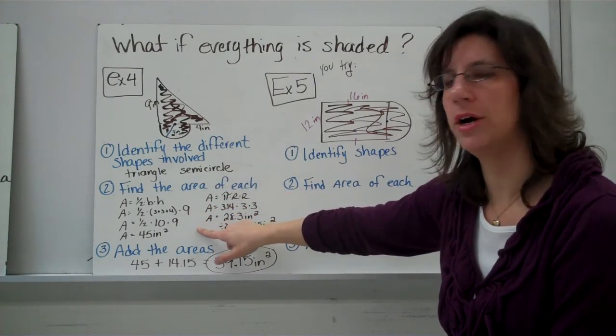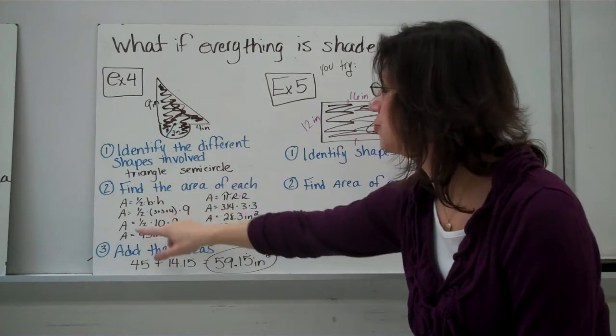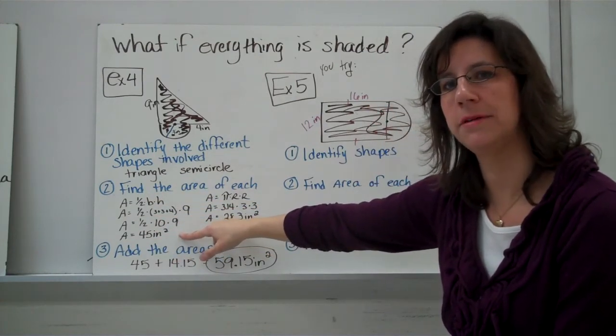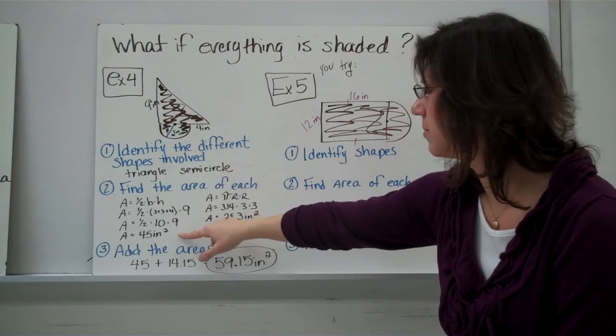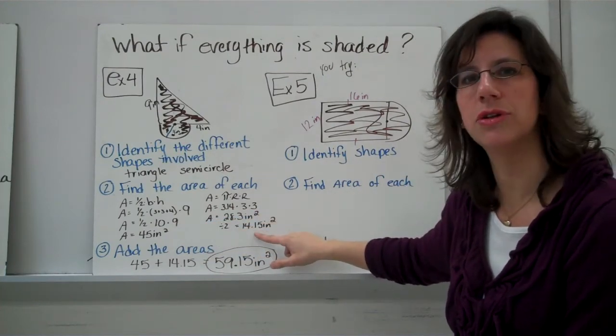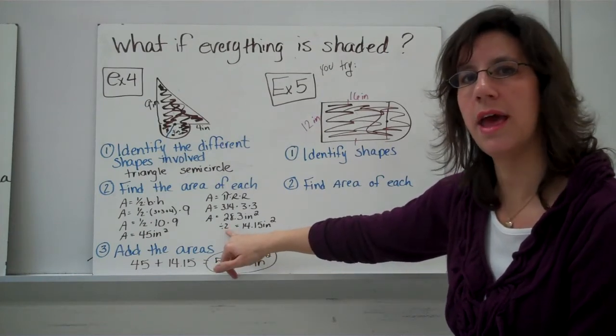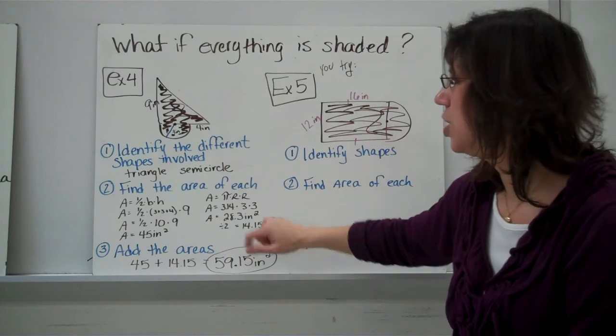Next, you want to find the area of each part. We've got the area of the triangle. Remember, it's one half times the base and the height. A lot of students forget the one half. And then, you're also going to find the area of the semicircle.